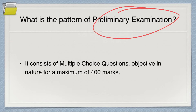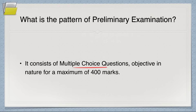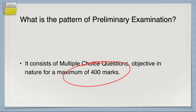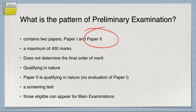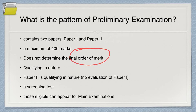So what is the pattern of the preliminary examination? It consists of MCQs — multiple choice questions — one question followed by four options A, B, C, or D, with only one correct answer. It is objective in nature. Maximum 400 marks, sometimes it comes down to 385. It basically consists of two papers: Paper 1 and Paper 2. Importantly, it does not determine the final order of merit.